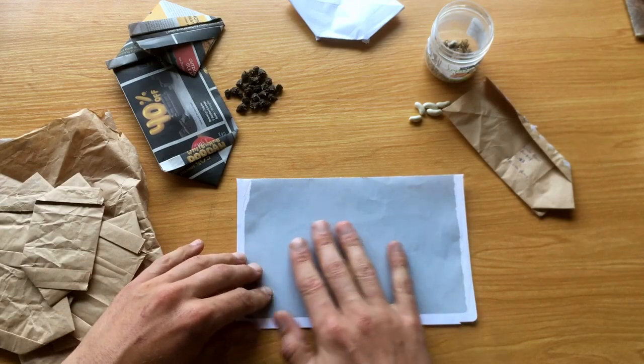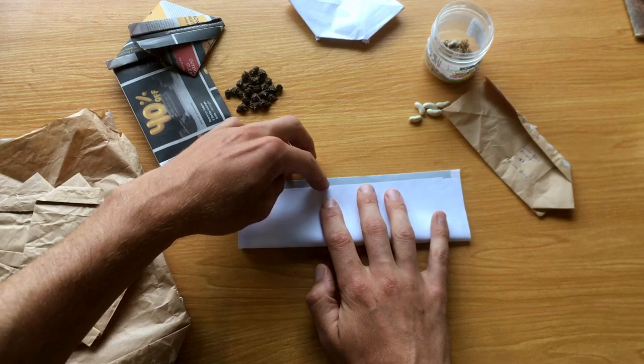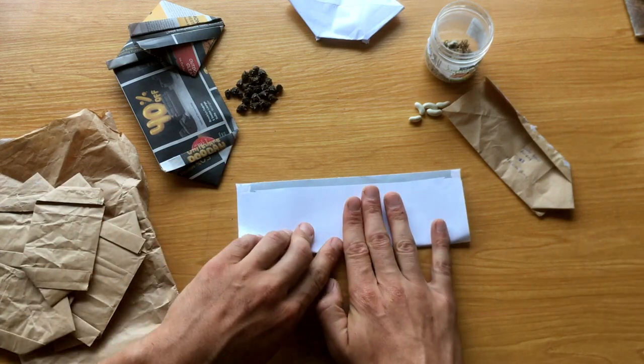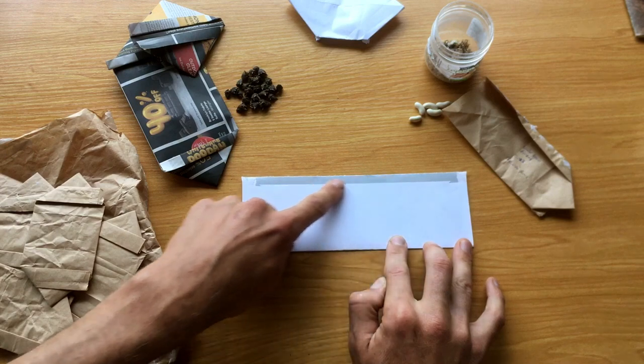You start off with the paper. You put it down. You fold it in half just below the other part, so there's a band on top. You can see over here.